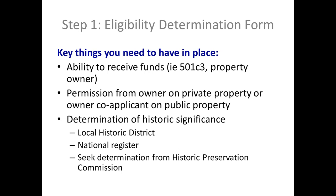In the eligibility determination phase, there are key things you need to have in place. You need the ability to receive funds — you are either a 501(c)(3) or the property owner. If you are not one of those, you need a co-applicant who will take on that fiscal role. You need permission from the property owner — public or private — and if you're applying for a historic fund, there needs to be a determination of historic significance, such as being on the national register or local district. If it's neither, you need to seek determination from the historic preservation commission.